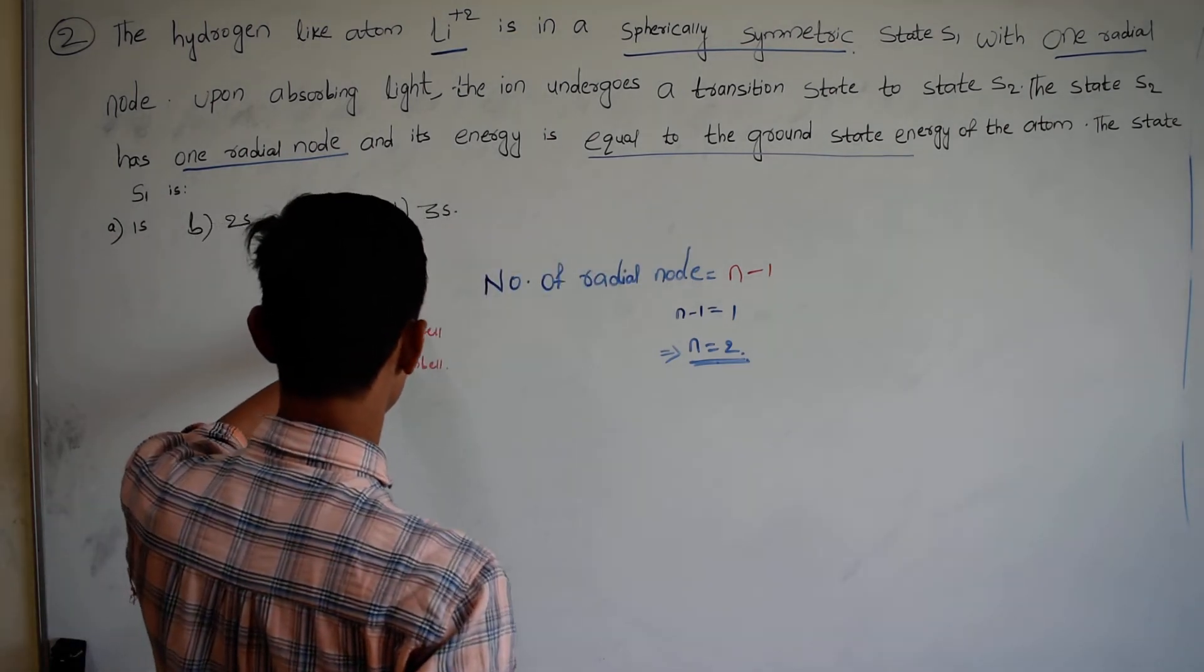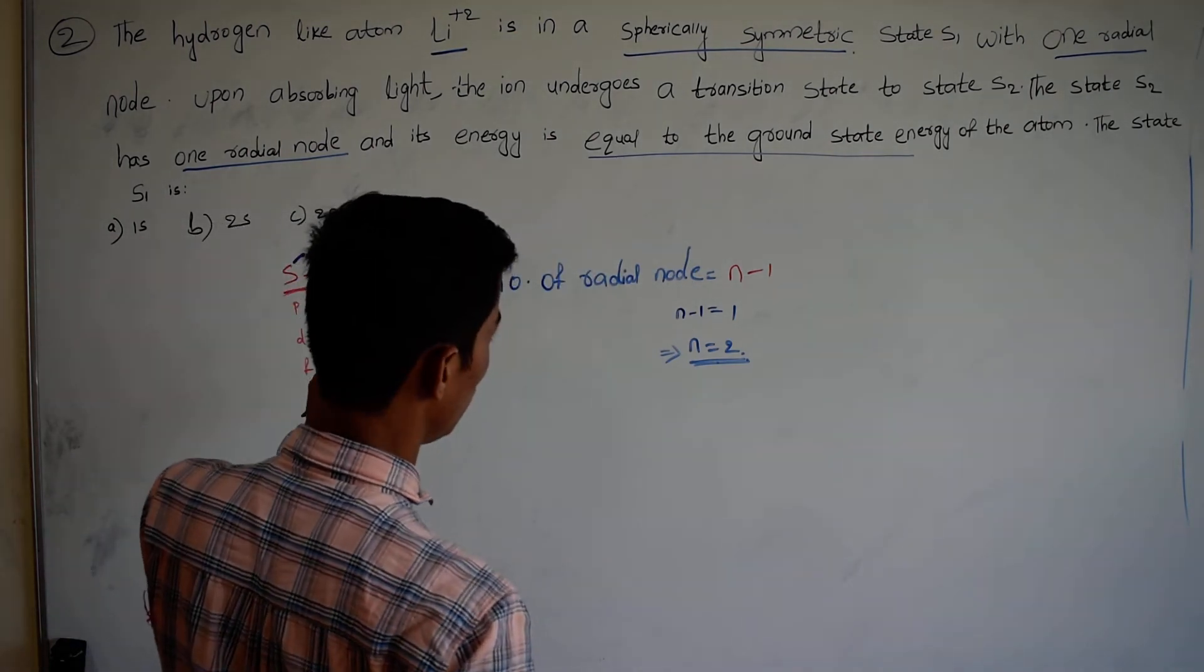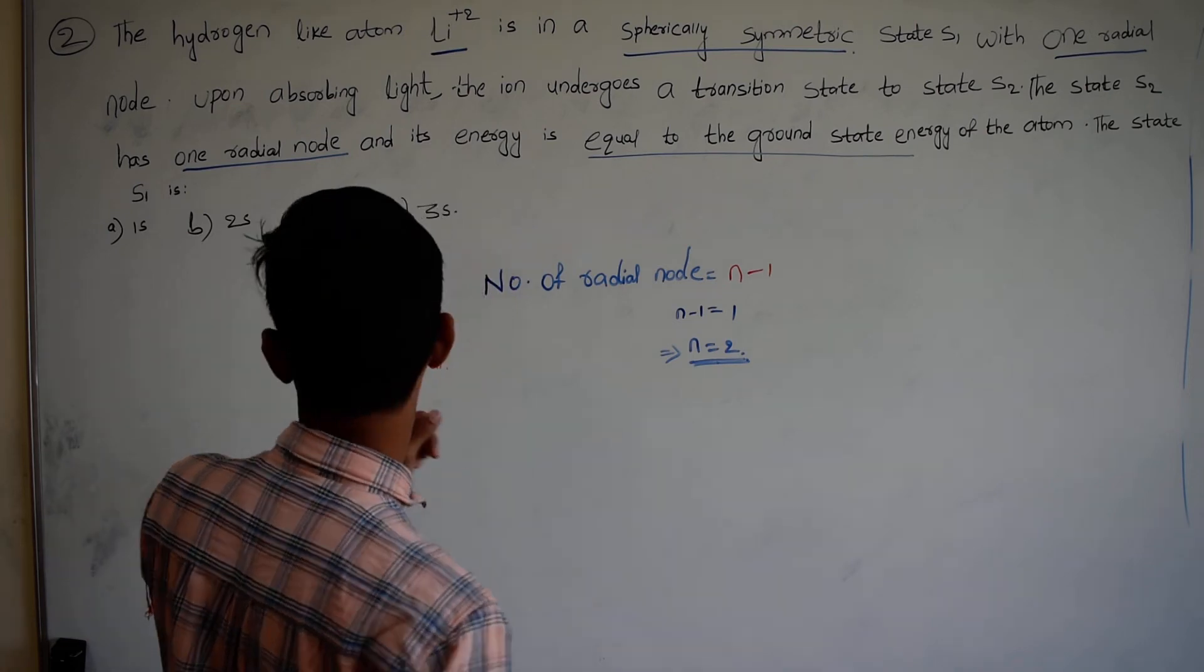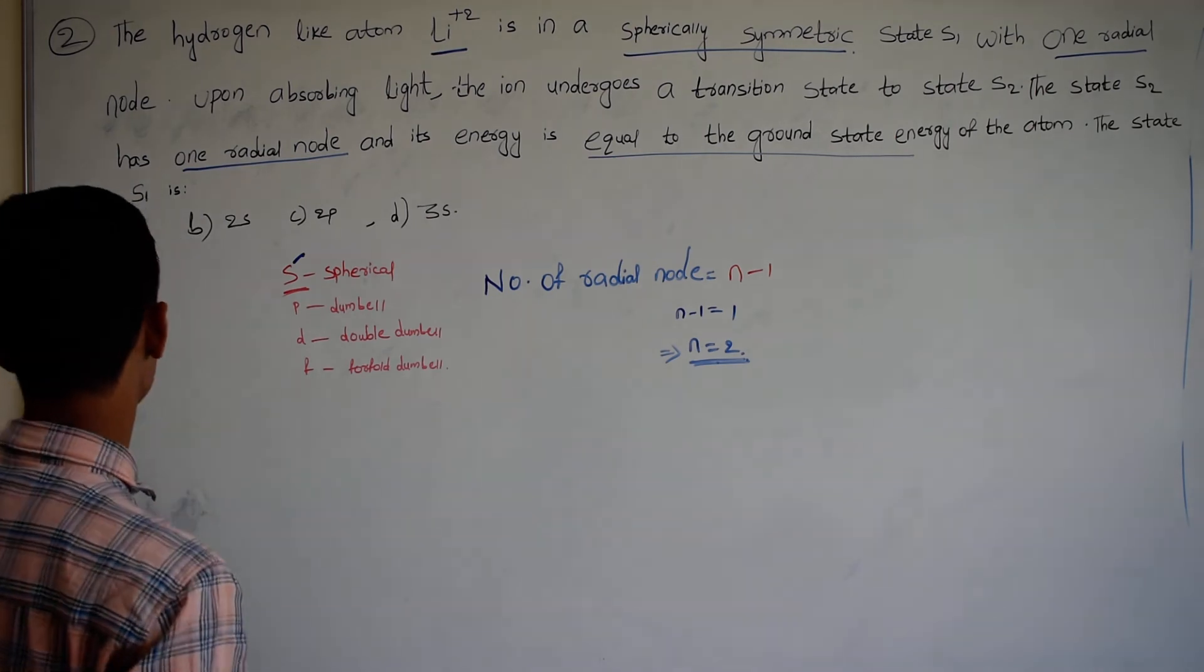We have our orbital. The orbital is S. If we update the state of S1, we have 2S.